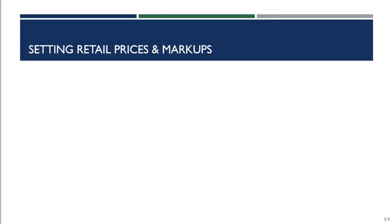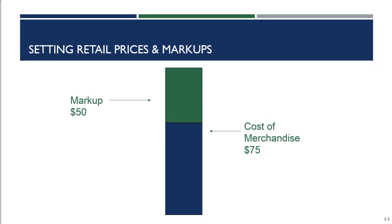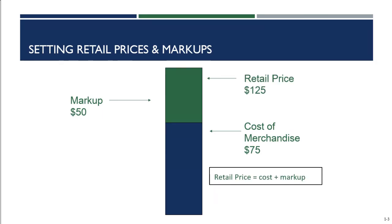Let's talk about the markup using the example from your book: a tennis racket purchased for a sporting goods store. The cost of that tennis racket was seventy-five dollars. Our markup is fifty dollars. That makes our retail price seventy-five dollars plus fifty dollars, or one hundred and twenty-five dollars.